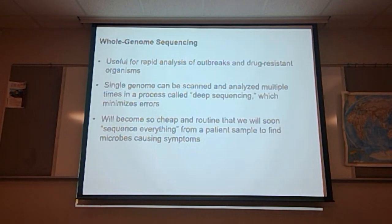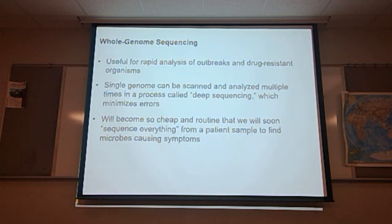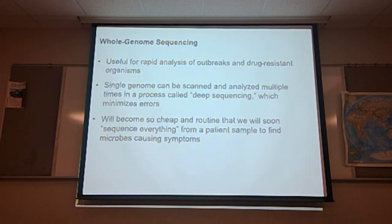Whole genome sequencing is useful for rapid analysis of outbreaks and for drug-resistant organisms. A single genome can be scanned and analyzed multiple times in a process called deep sequencing, which minimizes errors. It is suspected that over the next 15 to 20 years, this type of testing will become so cheap and routine that we'll sequence everything from a patient sample to find the microbes causing symptoms — looking for everything all up front.